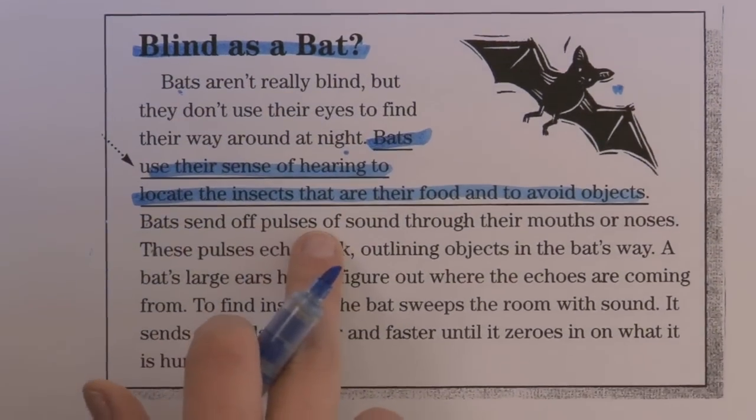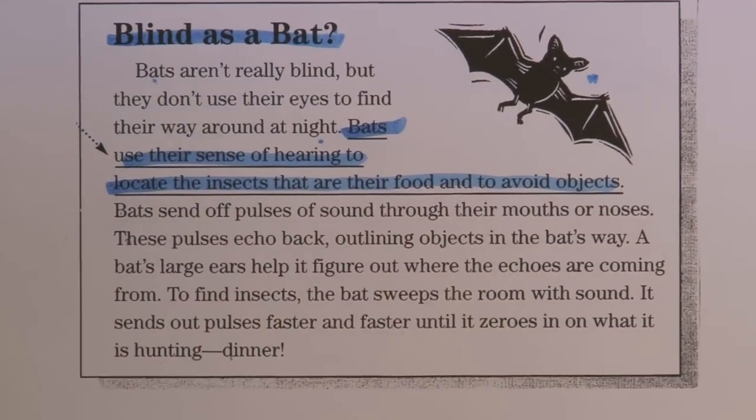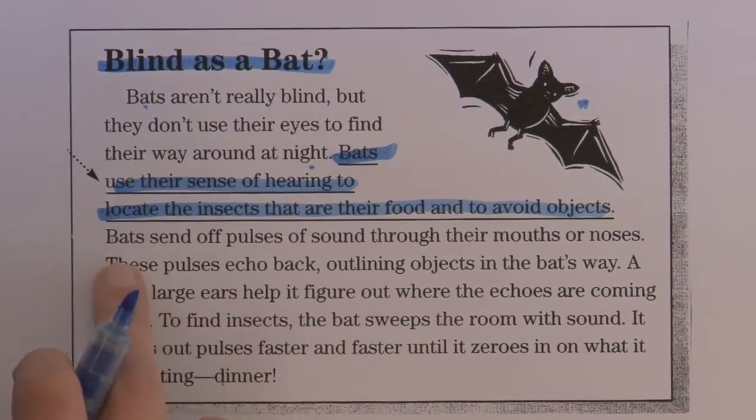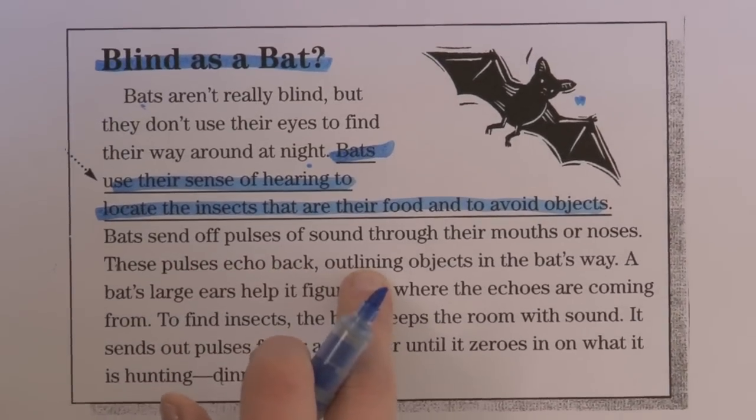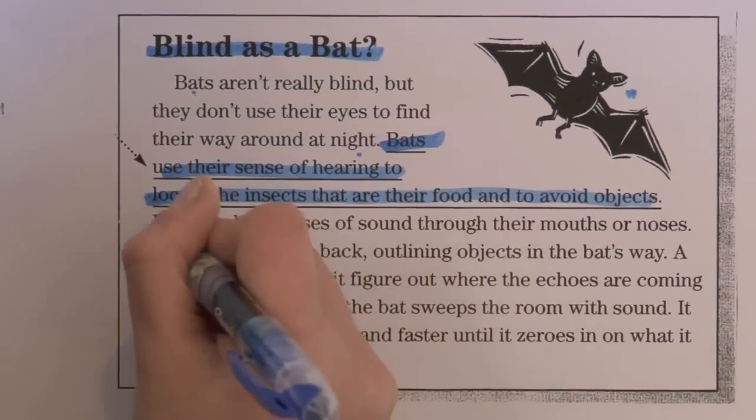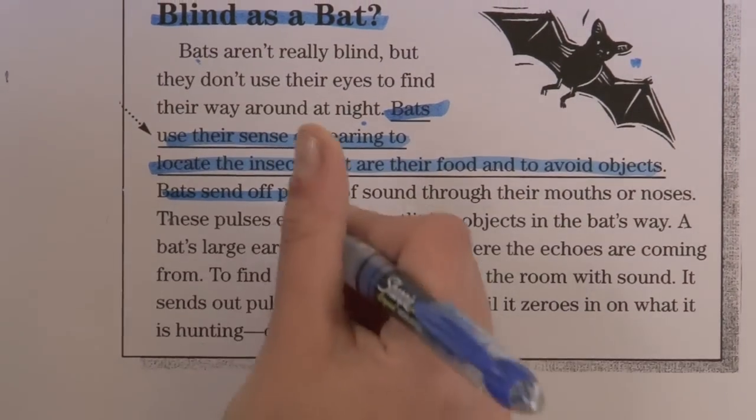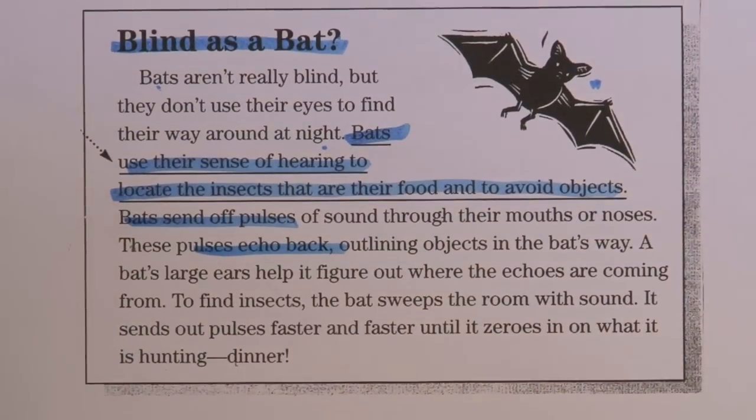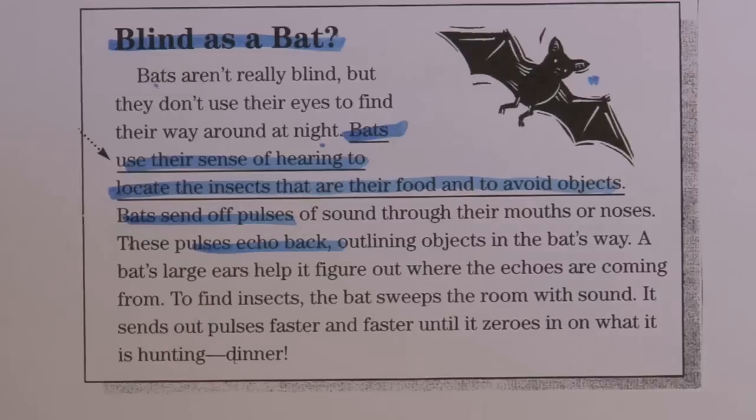Bats send off pulses of sound through their mouths or nose. These pulses echo back, outlining objects in a bat's way. So they send off pulses and these pulses echo back. When an echo happens, it goes back and forth.